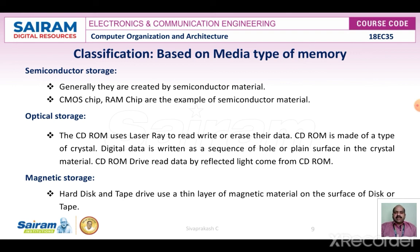Semiconductor storage includes CMOS chips and RAM chips. For optical storage, CD-ROMs use a laser ray to read, write, or erase data. The CD-ROM is made up of a type of crystal where digital data is written as a sequence of holes or a plain surface in the crystal material. The CD-ROM drive reads data by reflecting light off the CD-ROM surface.